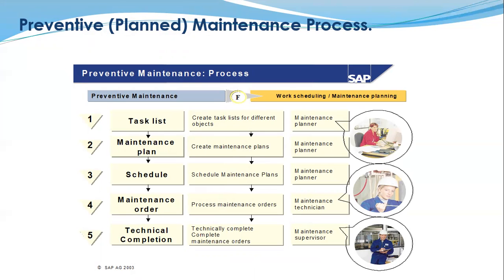With the preventive maintenance process, you create your task list where you list all the activities that you'll be performing during the maintenance. Next, you plan the maintenance using a maintenance plan. You create your maintenance plan with your task list and then schedule the maintenance plan. When the planned time is due, the system automatically generates your maintenance order. After carrying out the maintenance, we perform technical completion.